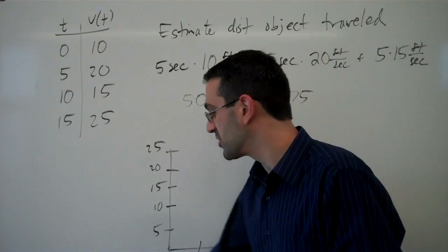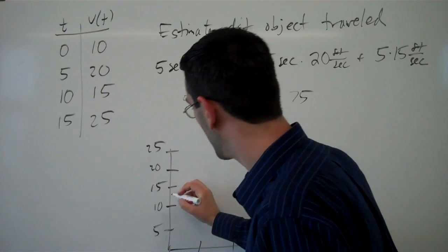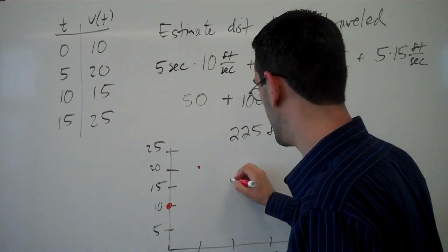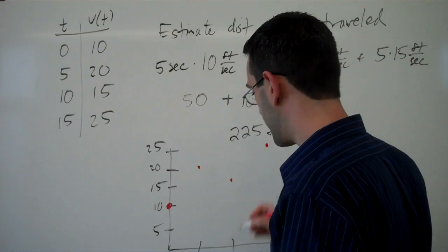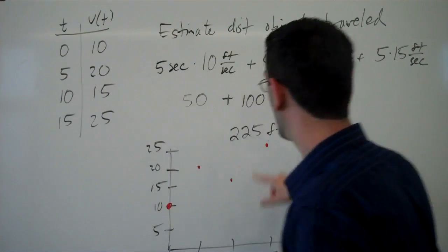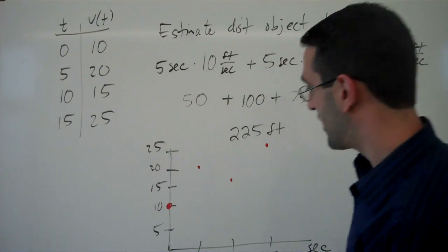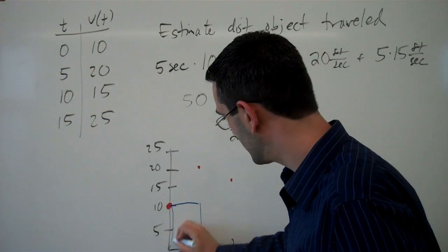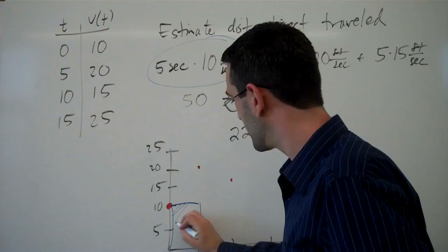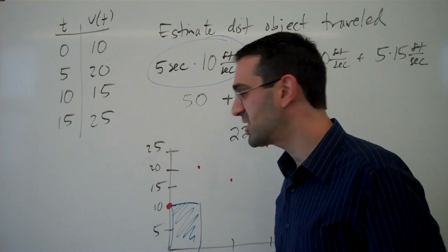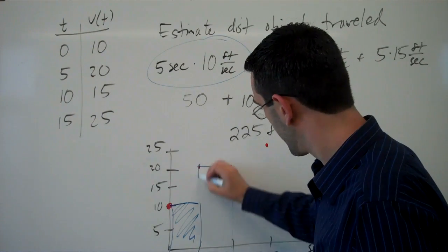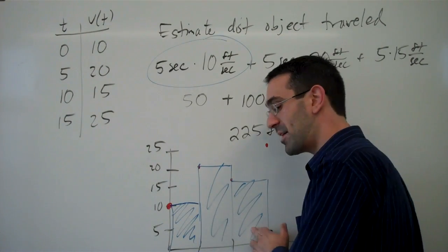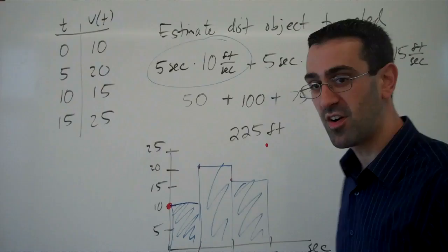Really, the only information we had about this function was that the velocity at time 0 was 10, at 5 was 20, at 10 was 15, and at 15 was 25. And so really, what we did when we did this calculation is say, over this 5 seconds, we're going to presume that the velocity is constant, and this first product here corresponds with an area of a rectangle again, and same idea here, area of a rectangle, here, area of a rectangle. And the sum of these areas gave us our estimate for distance.